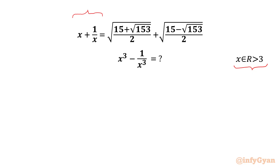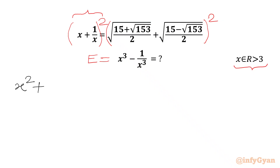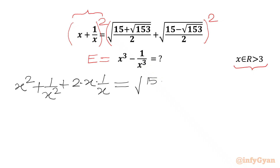So let's get started by considering the required expression equal to E first. Now we will be squaring both sides, putting power 2 on RHS as well as LHS. We have to use the a plus b whole square formula. We will get x square plus 1 over x square plus 2 times x times 1 over x in the LHS. In RHS we will write square root of 15 plus square root of 153 over 2, whole square.